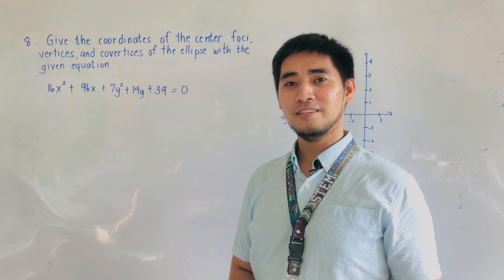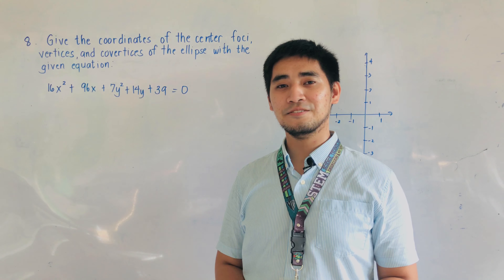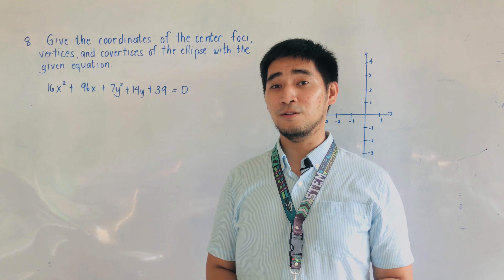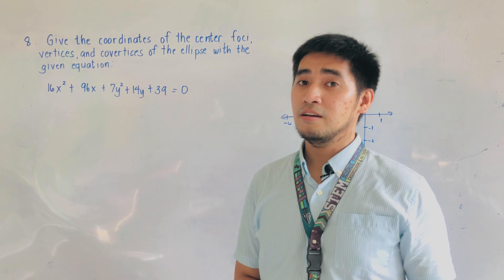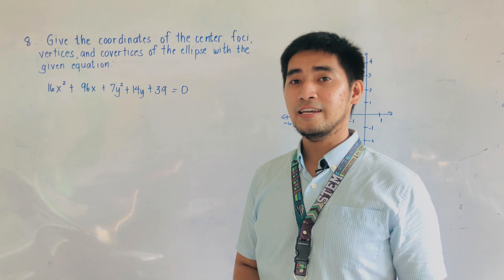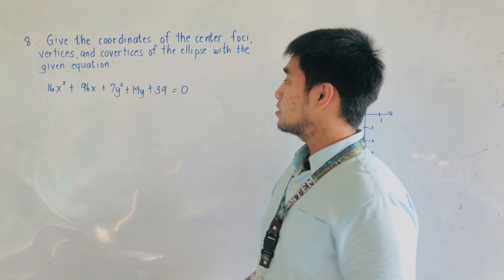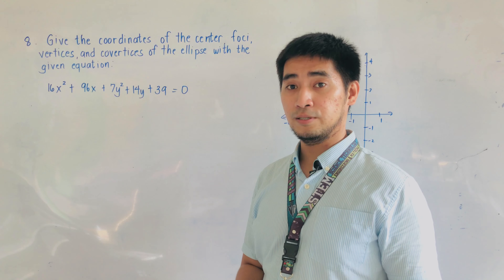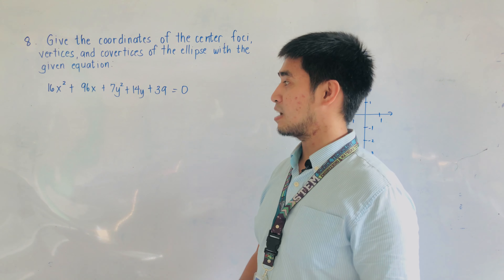Hi, Judgers! Welcome to another segment of One Earlywag Memorial High School Senior High School Math TV. Last time, we were able to solve an equation of an ellipse and give the coordinates of the center, the foci, the vertices, and the co-vertices. So for this day, we will continue with another example. The process is still the same, but we're given another example.